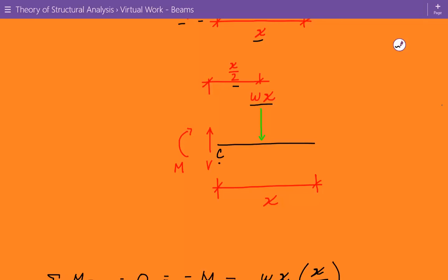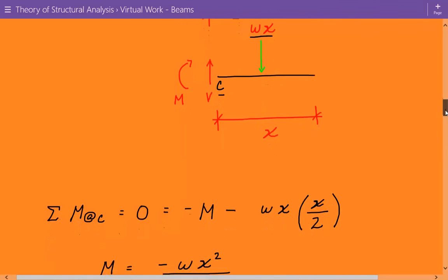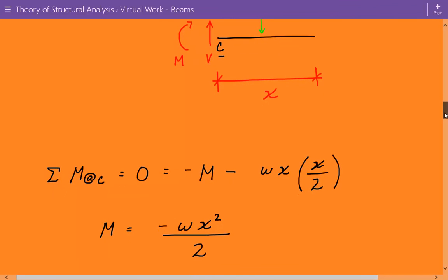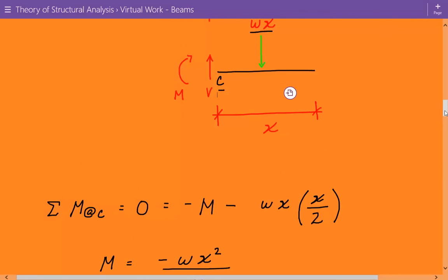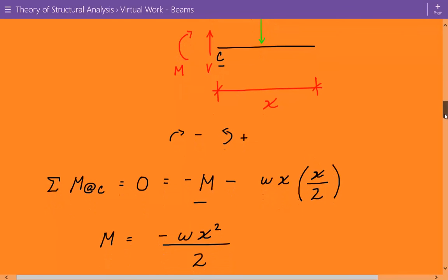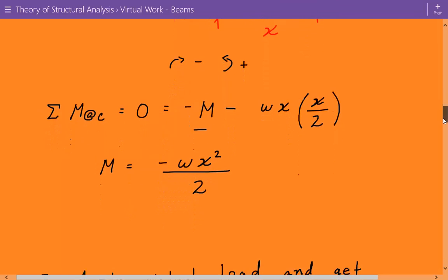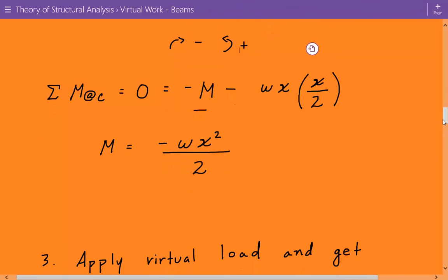So now, we're going to take a moment about location C to get the internal bending moment function. So it's going to be equal to negative M. Clockwise is negative and counterclockwise is positive. So it's going to be negative M minus W times X, which is the resultant, times X over 2, which is the moment arm. So our internal bending moment function is equal to negative W times X squared over 2.